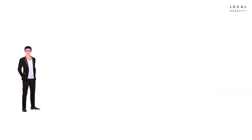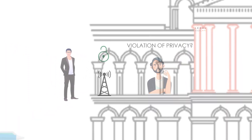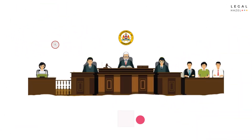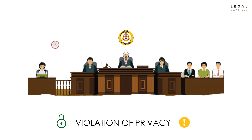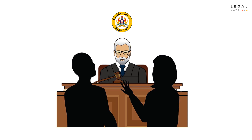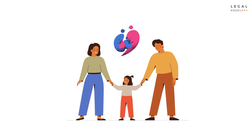Aggrieved by the said order, Raj, who is Tina's alleged paramour, approached the Karnataka High Court. The question was whether the summoning of Raj's mobile tower location violated his right to privacy. It was argued on behalf of Raj that he is a third party to the proceedings and the family court's order violated his right to privacy. It was argued on behalf of Anil that the mobile tower location details are necessary to demonstrate the illicit relationship, and that he wants his wife back to save his marriage as well as the future of their child.